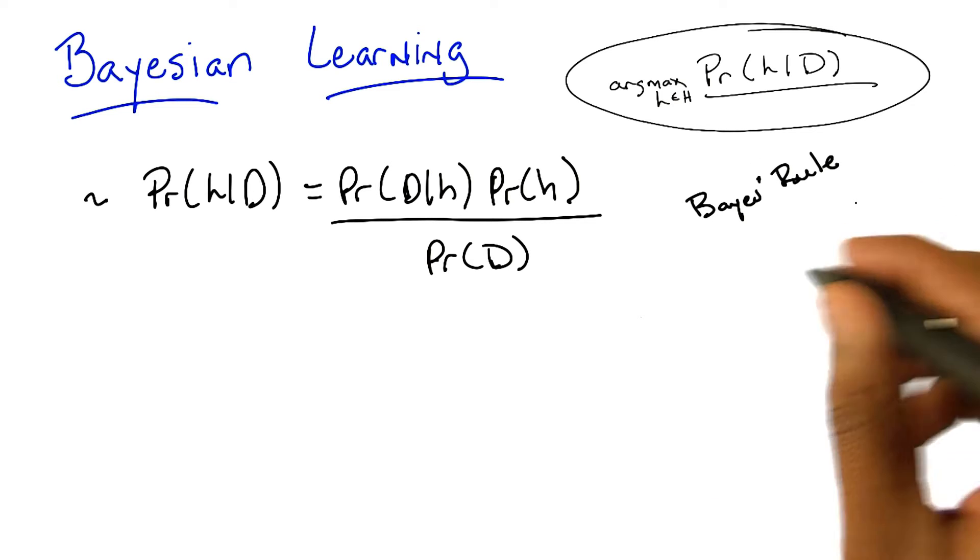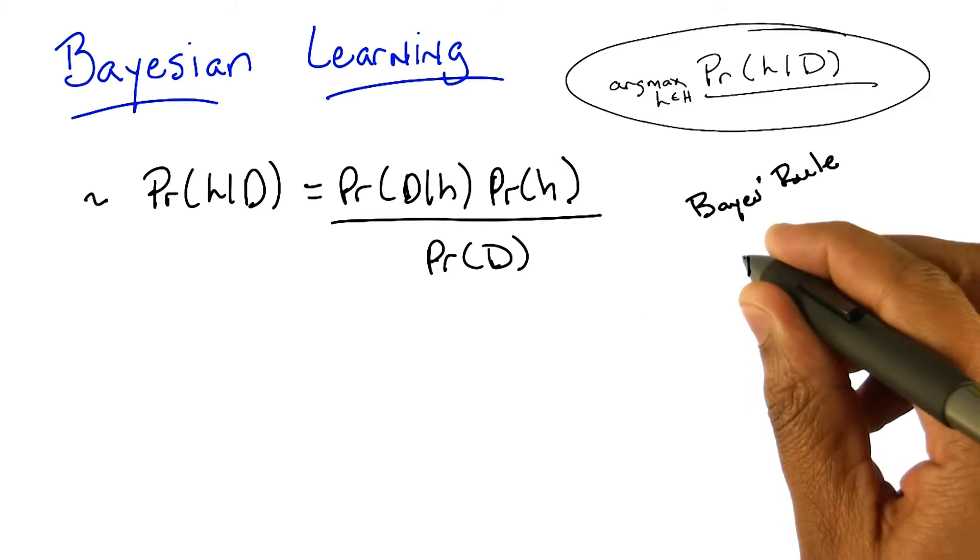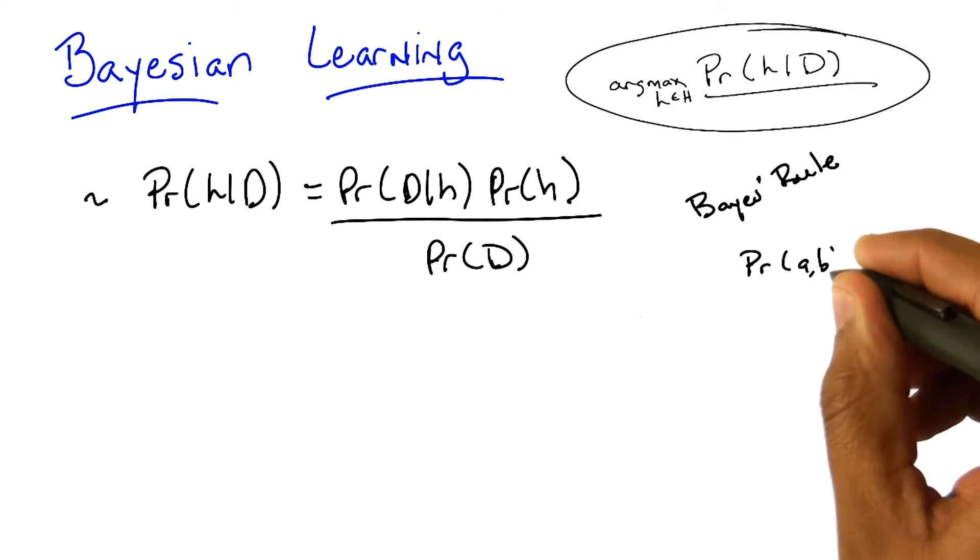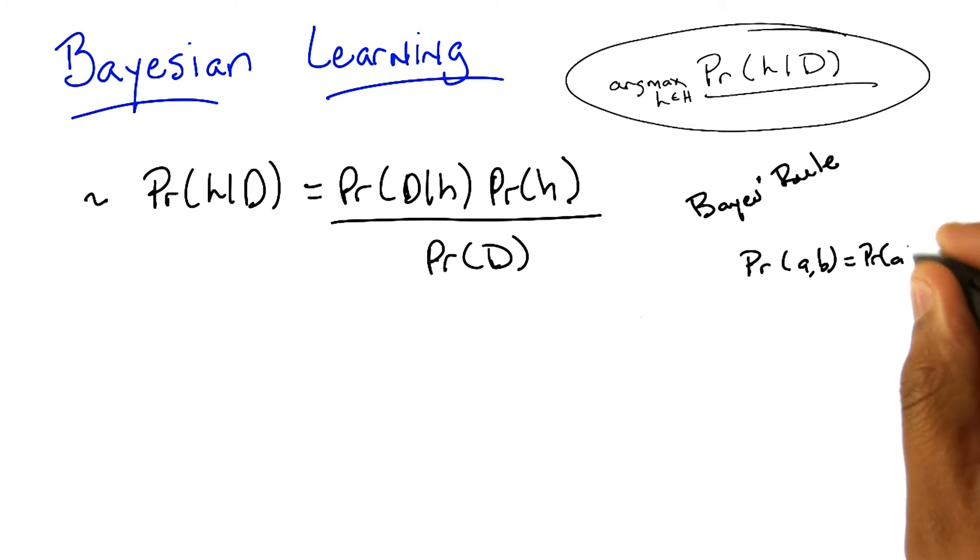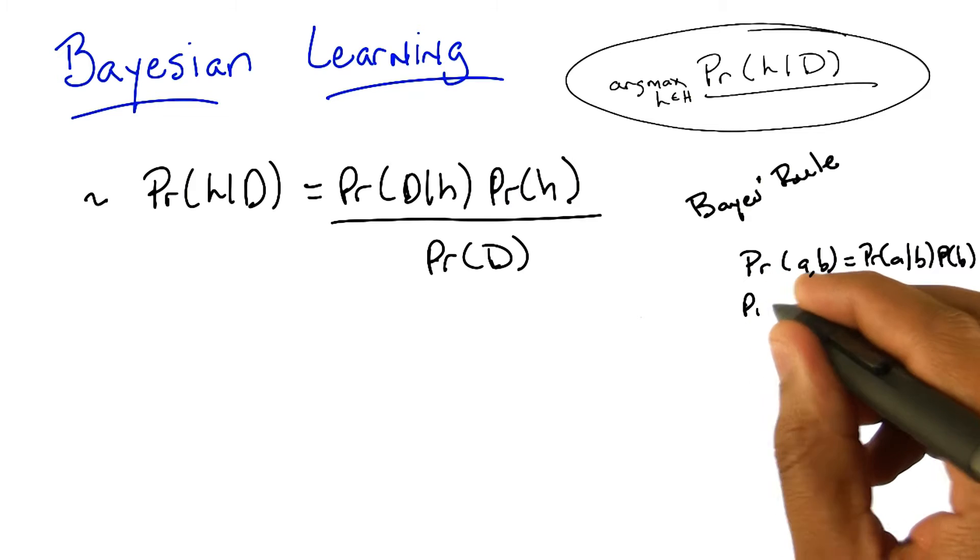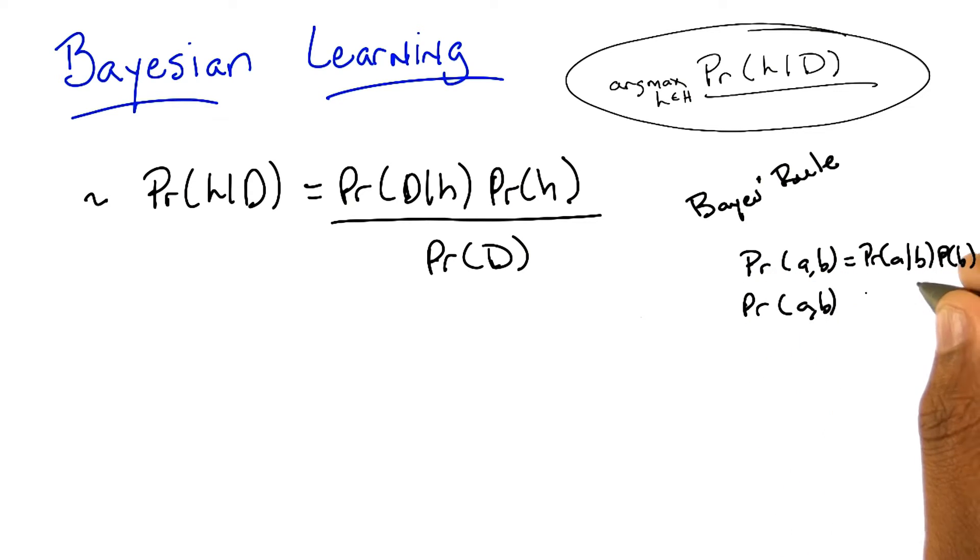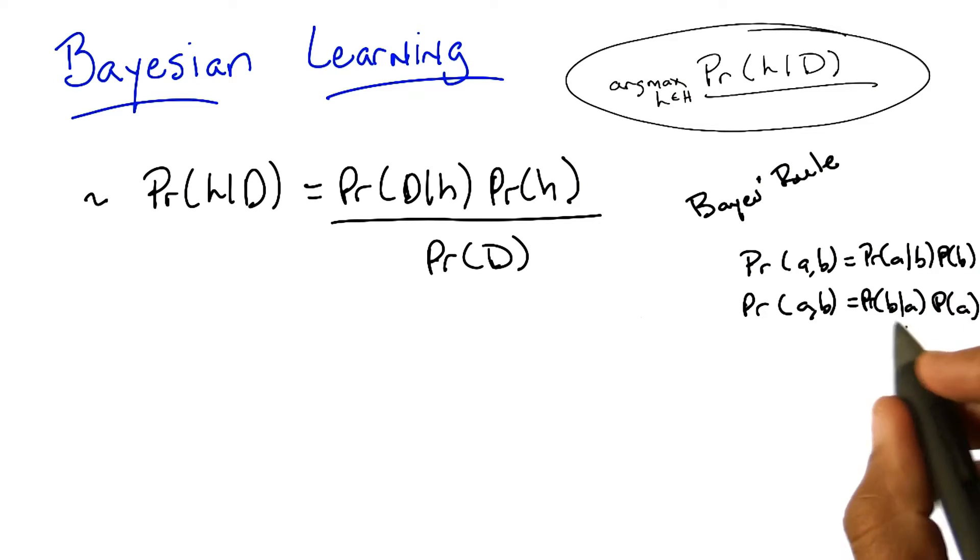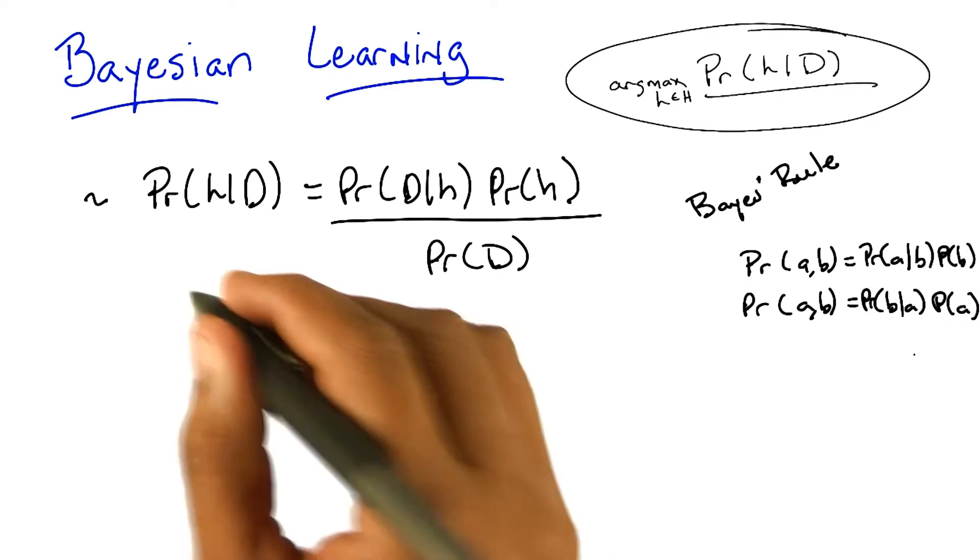So I could write down what you just said, and use different letters just to make it more confusing. So you can point out that the probability of A and B by the chain rule is just the probability of A given B times the probability of B. But because order doesn't matter, it's also the case that the probability of A and B is the probability of B given A times the probability of A. And that's just the chain rule. And so if these two quantities equal one another, it's exactly what you say. The probability of A given B is just the probability of B given A times the probability of A divided by the probability of B. And that's exactly what we have over here.